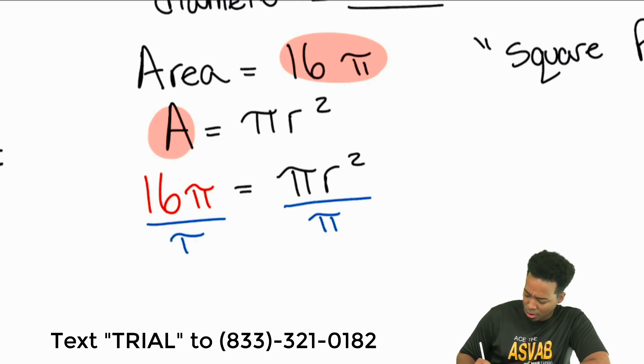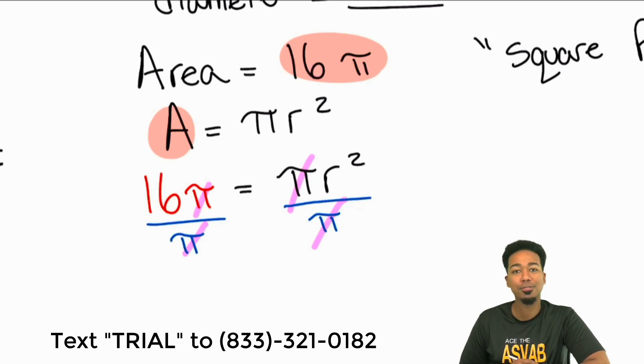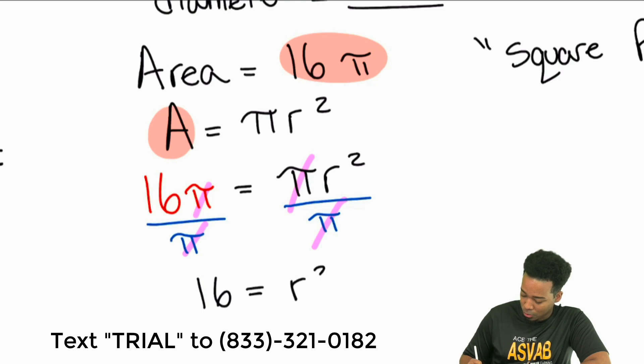First thing I'll do is I'll go ahead and divide both sides by π. Because again, I'm trying to get that r by itself. So when I do that, something beautiful actually happens. It cancels on the right side and it cancels on the left. Very fortunate for us. We're nice and easy there.